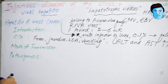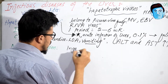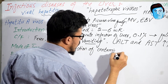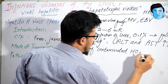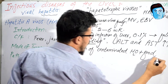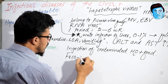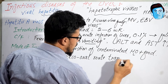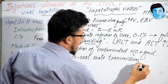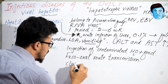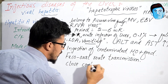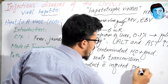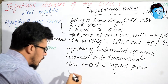The mode of transmission of hepatitis A is by ingestion of contaminated water and food via the feco-oral route, and through close contact with an infected person.